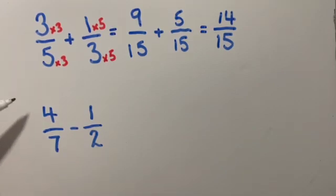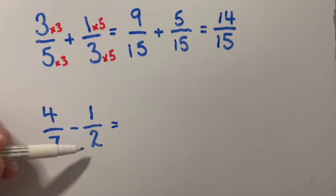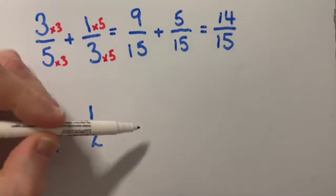We're now going to try a takeaway. So four over seven take away one half. So what we need to do first, because the denominators are different, we need to find the lowest common multiple of seven and two.